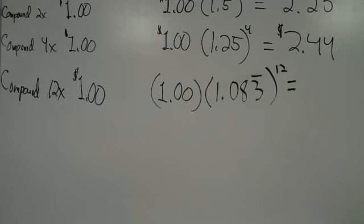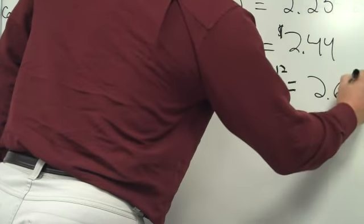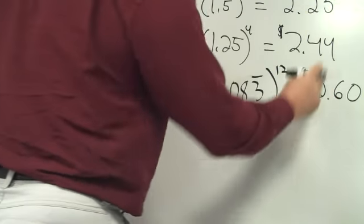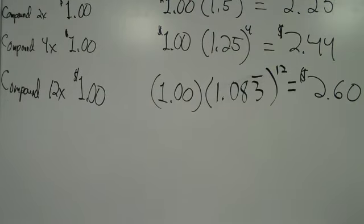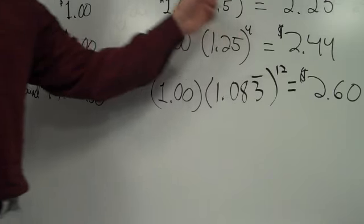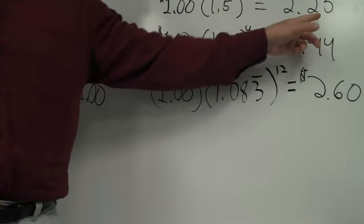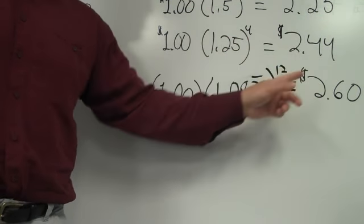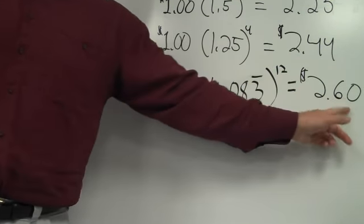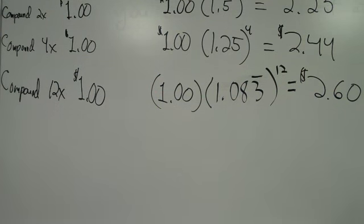Who's going to give me that one? $2.60. How much of an advantage is that over $2.44? How many more pennies did we get? 16. So first, we went from simple interest to compounded twice yearly, we get 25 extra cents. We go to four times, we get 19 extra cents. We go to 12 times a year, we only get 14 extra cents. So we're getting what's called a diminishing return. There's a point past which this might not be worth it.